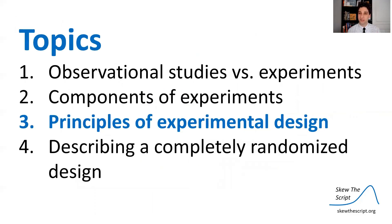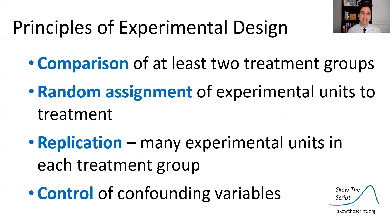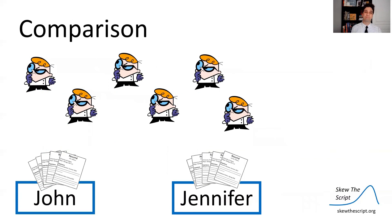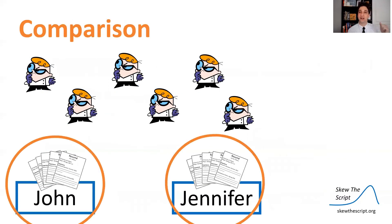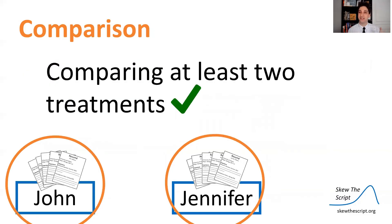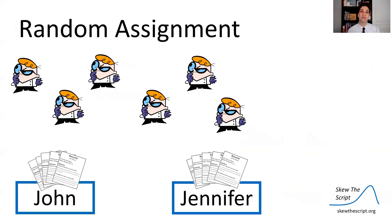Let's talk about the four principles of experimental design and how the researchers used them in this study: comparison, random assignment, replication, and control. For comparison, there are two groups — John and Jennifer — and results are compared at the end. That's one essential component.